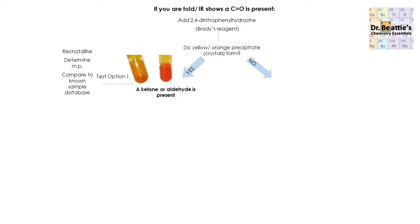Your first test option at this stage is to work out exactly what ketone or aldehyde is present — its exact identity — by doing the melting point of the purified crystals. These types of questions usually have three marks: recrystallise the precipitate for the first mark, determine the melting point for the second mark, and compare to a known sample database for the third mark. This only works if there is melting point data available, and then you can get the specific identity of the aldehyde or ketone.